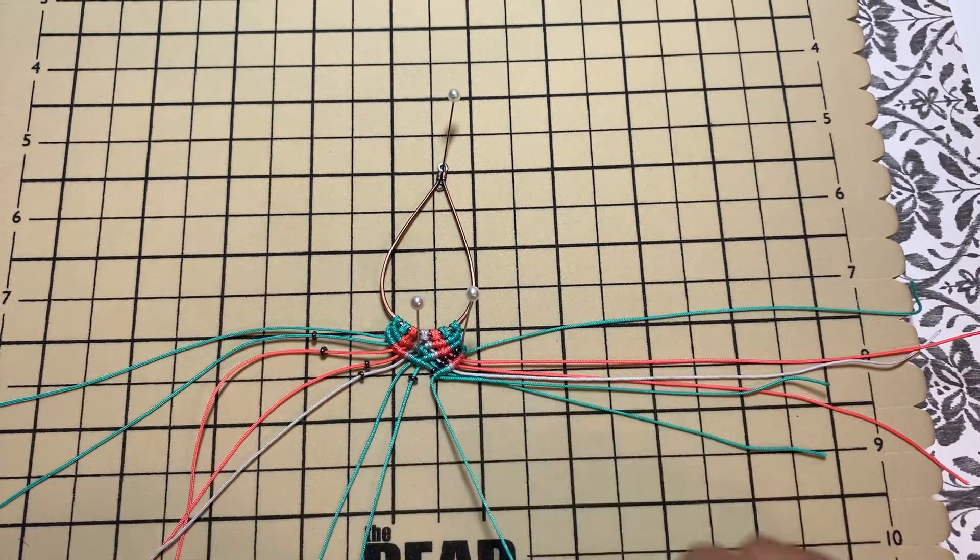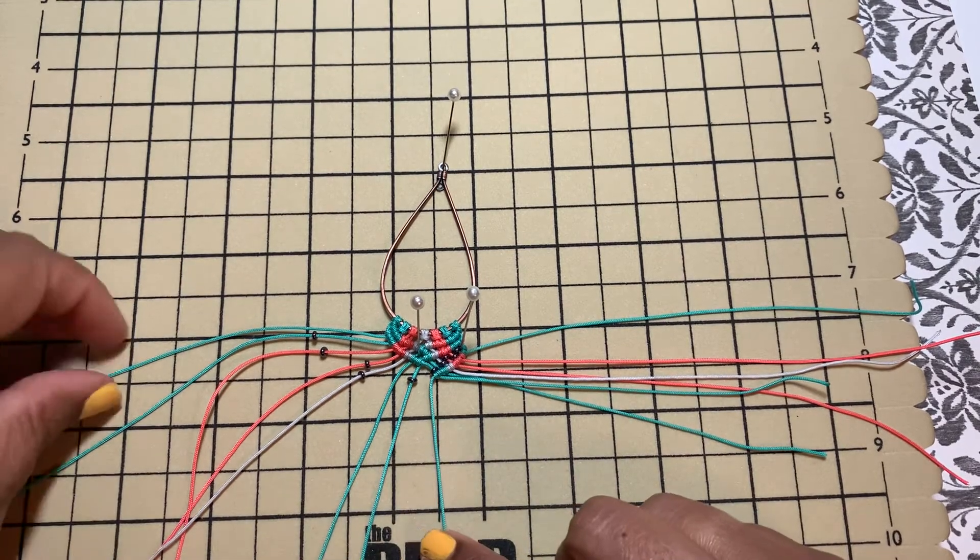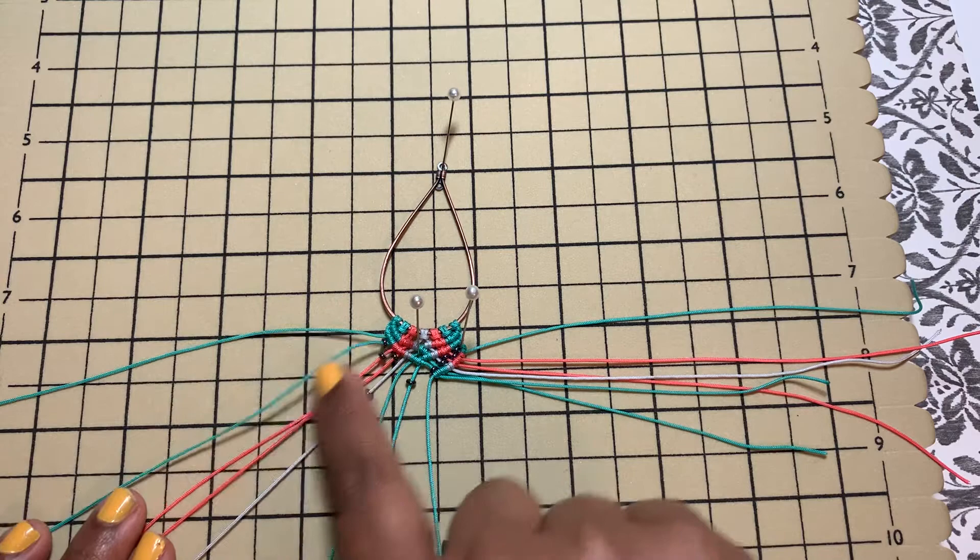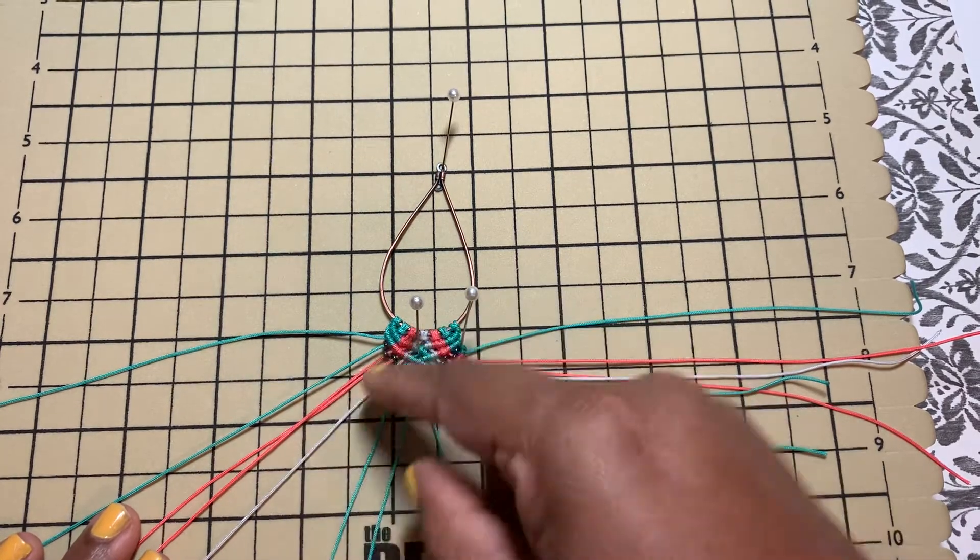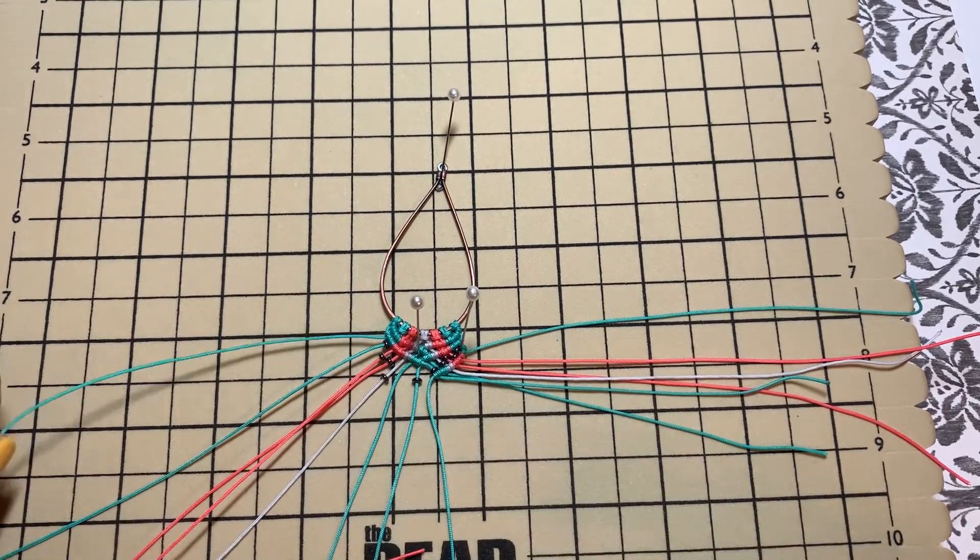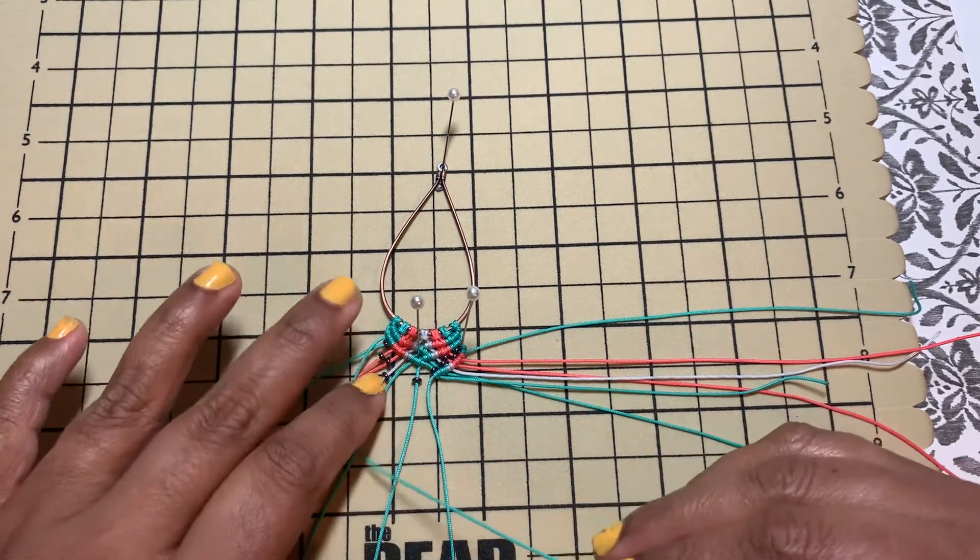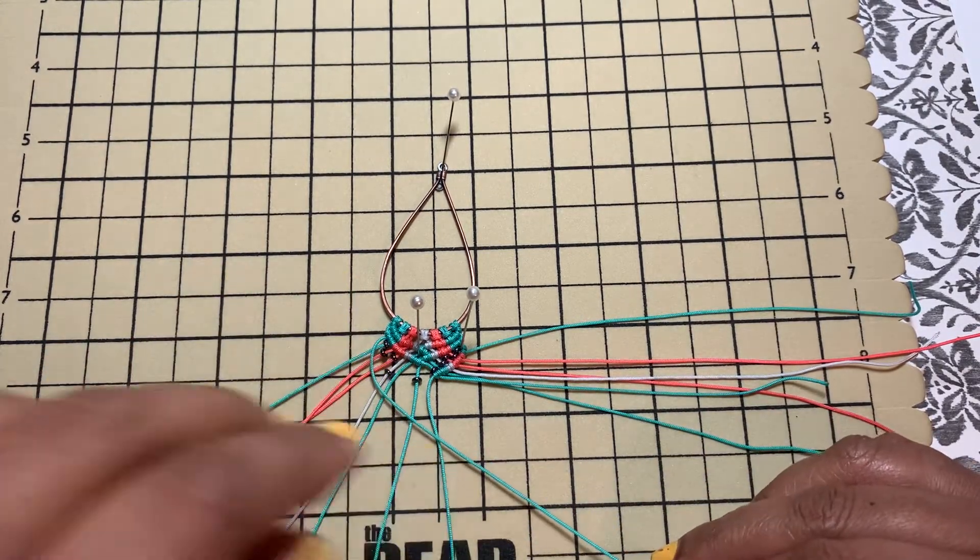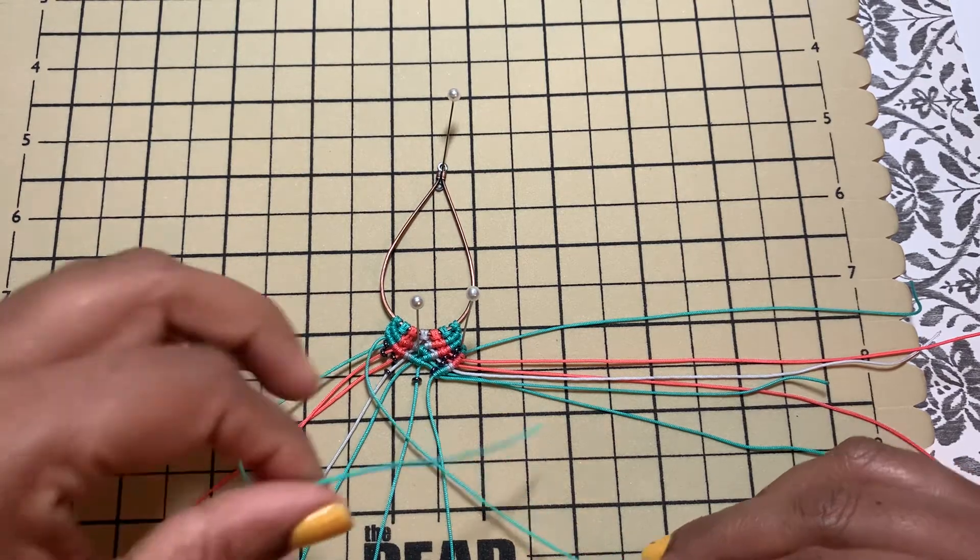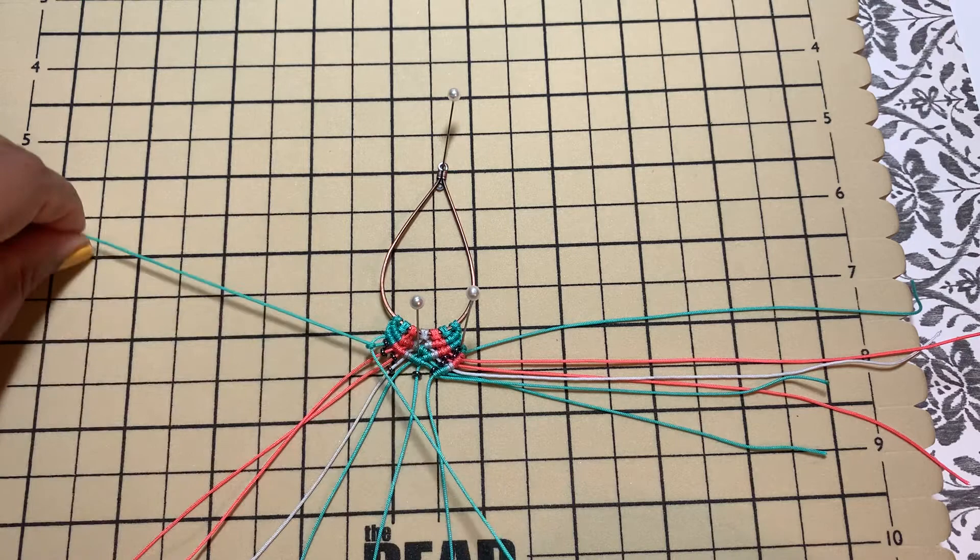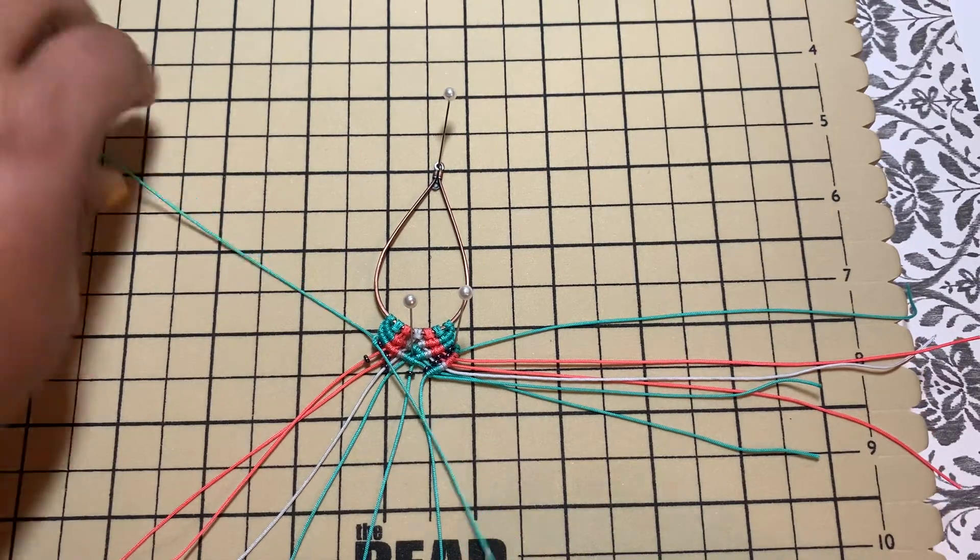Now we'll do the left side. Thread all the beads close to your knots, take the leftmost cord and keep it as your holding cord. Then take this one and knot it over and under.